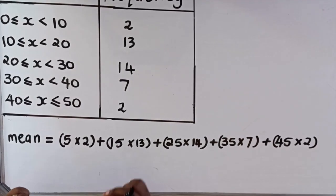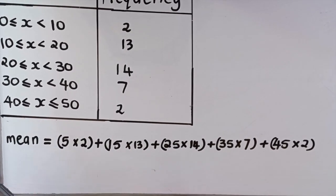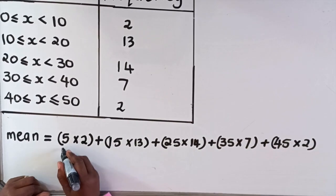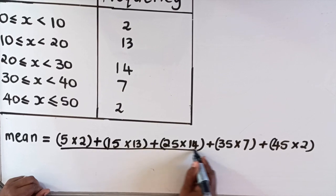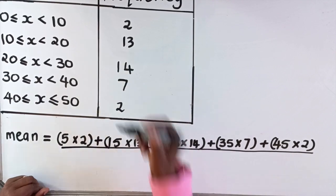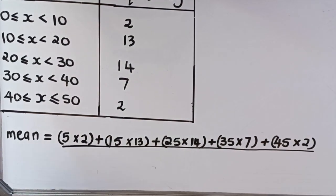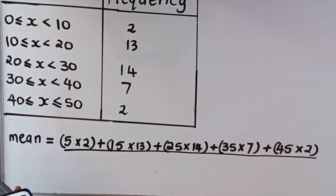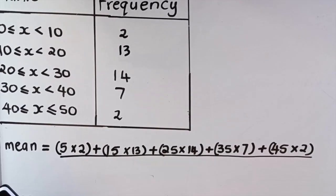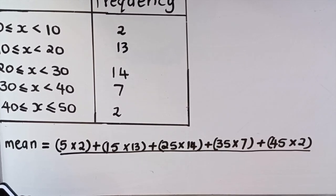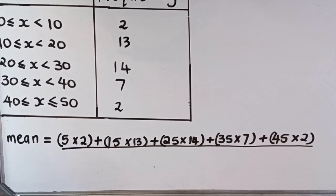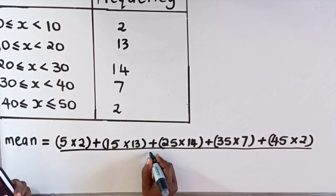Same thing here - you've added all the frequencies and midpoints, you have to divide by the total of the frequency. So you have to add this and get the total. I'm going to use the calculator: it's 2 plus 13 which is 15, plus 14, plus 7, plus 2. So the total is 38. It means in this class there were 38 learners.